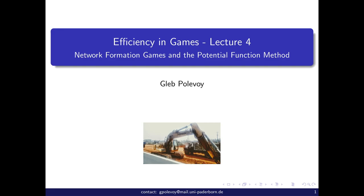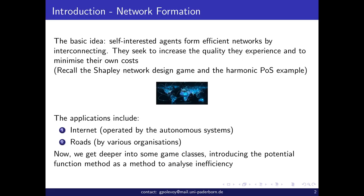In network routing, a network already exists and agents decide how to route traffic. Here, the basic idea is that you have self-interested admins which are in control of parts of the network. Not necessarily is an agent associated with a single node — sometimes an agent can control several nodes. They want to form efficient networks by interconnecting, increasing the quality of the connection, and minimizing their costs. Generally speaking, the utility of an agent is a trade-off between quality and minus cost.